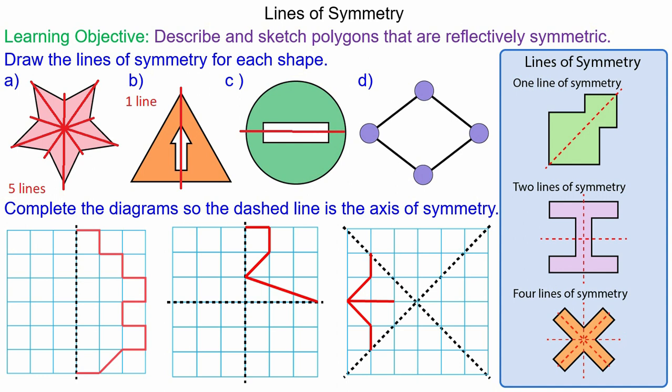And for c, a circle would have an infinite line of symmetry but the rectangle in the center gives it two lines of symmetry, a vertical and horizontal.